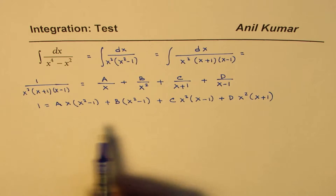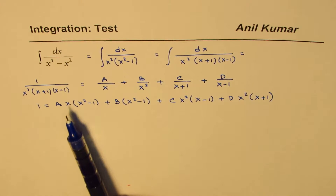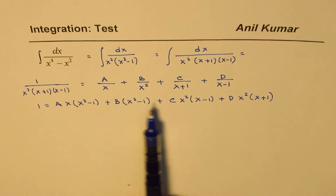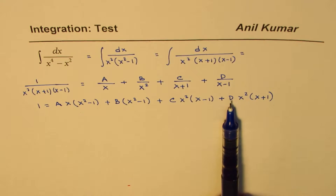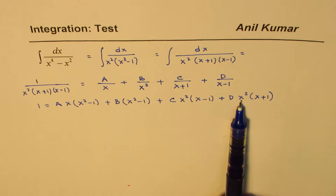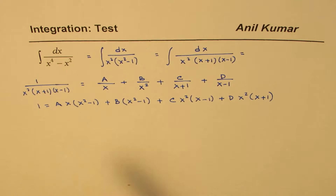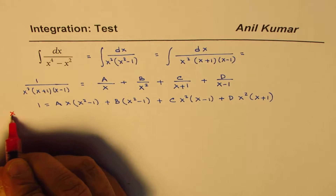There are many techniques for finding the coefficients at this stage. What I prefer is to substitute values that can make most of these factors zero and one of them non-zero, to find each coefficient. So we can begin by substituting x equals 0.